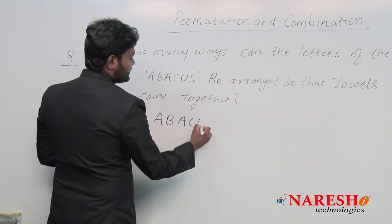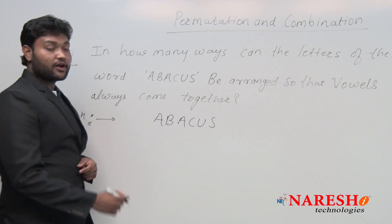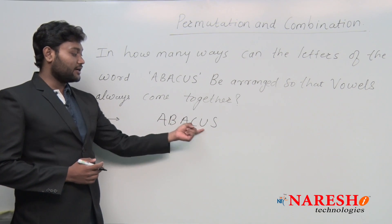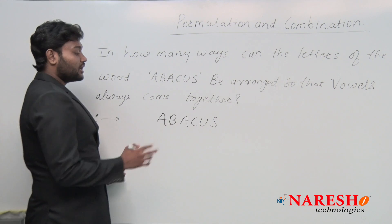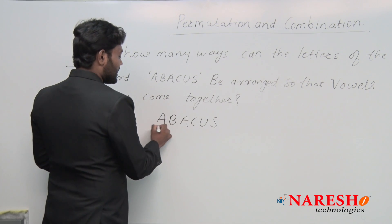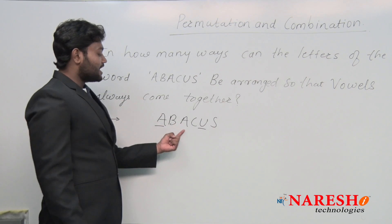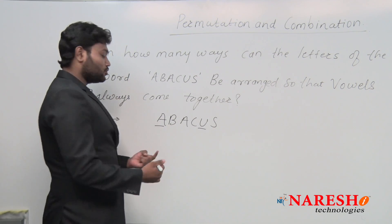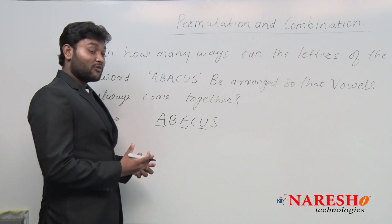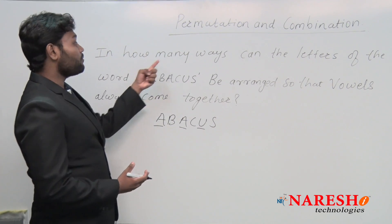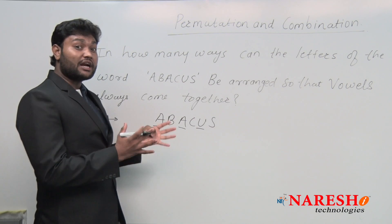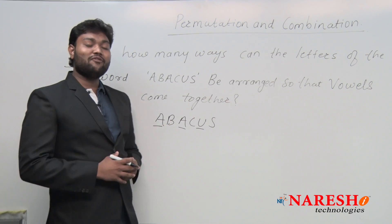Now, observing the word ABACUS — A, B, A, C, U, S — we can see that there are only two distinct vowels: A and U. However, A is occurring two times. The condition is about arrangement — in how many ways can the letters of the word ABACUS be arranged? Arrangement means permutation.